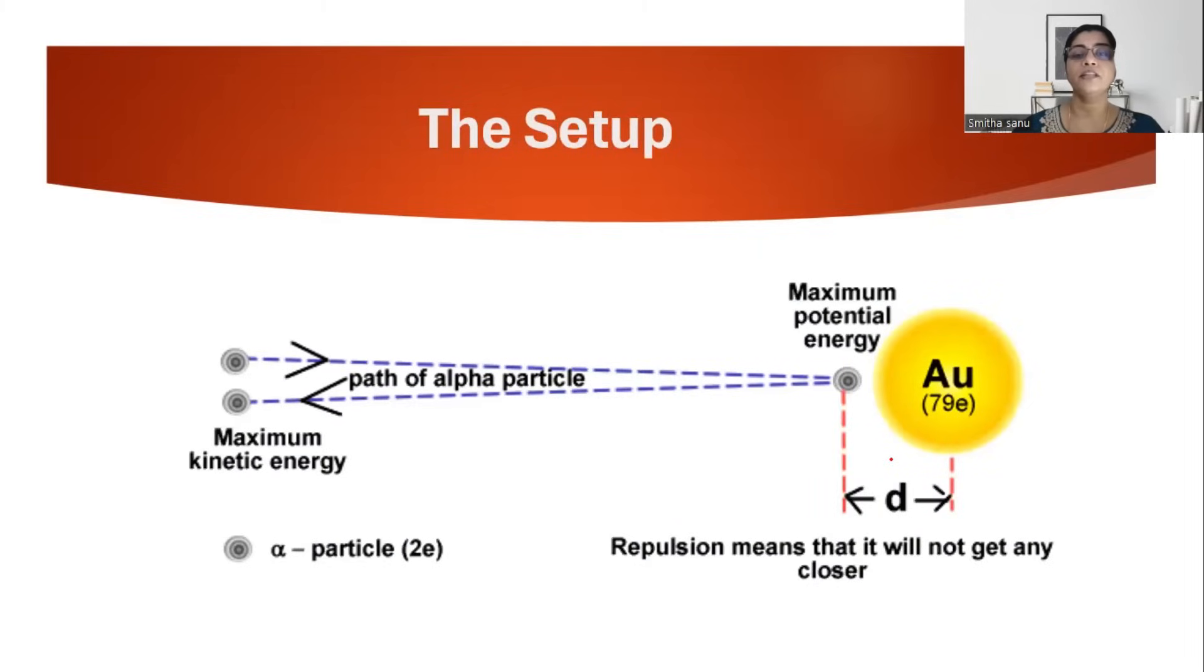If you can look at the setup here, when an alpha particle is moving, it will have maximum kinetic energy. As it comes closer to the nucleus, it becomes slower and slower, and it reaches a point where it stops moving. That's when it has highest potential energy.